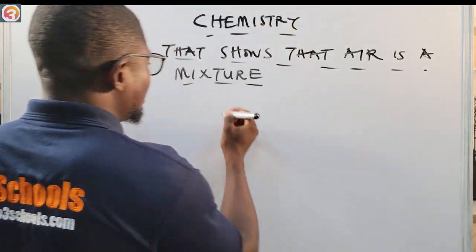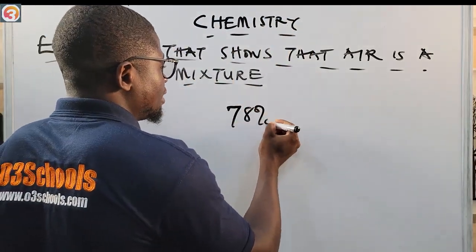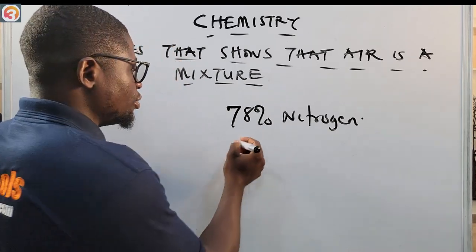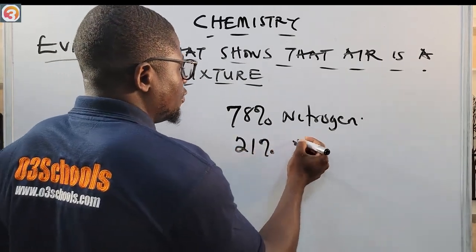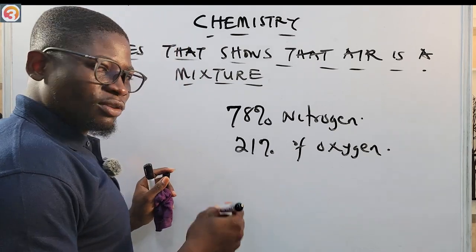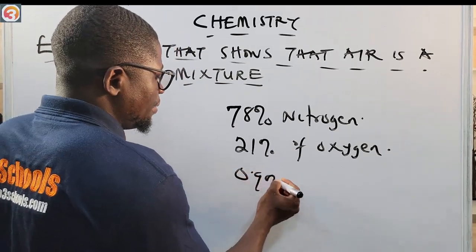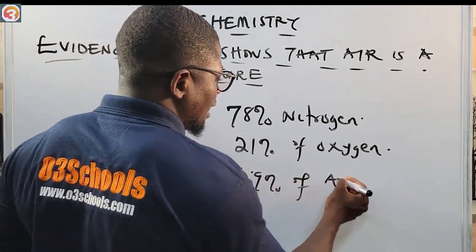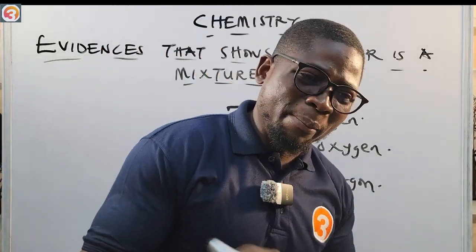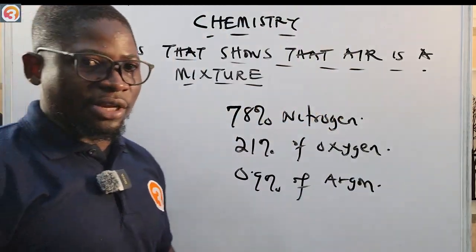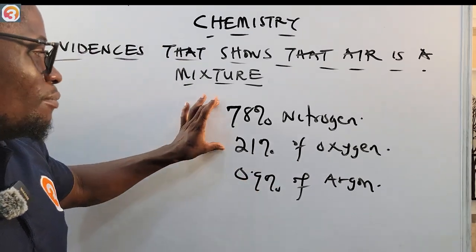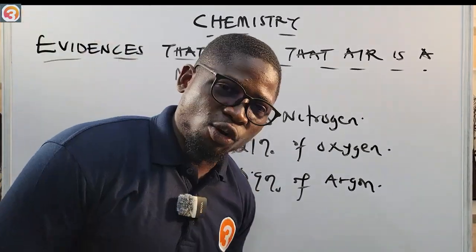We said in the last episode that air contains 78% nitrogen, 21% oxygen, 0.9% argon, and then it contains about 1% of other substances. So in the component of air, we have more of nitrogen and oxygen.